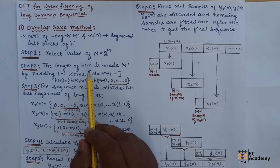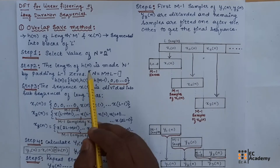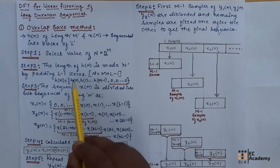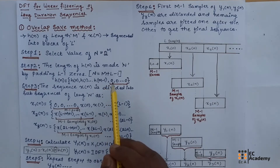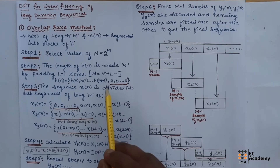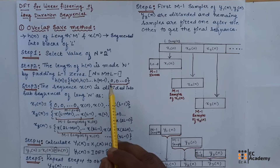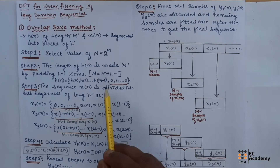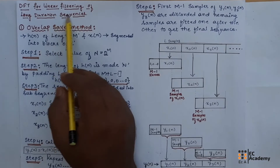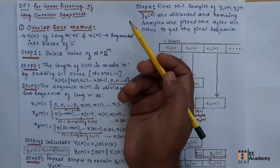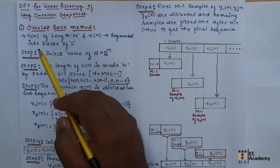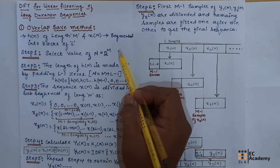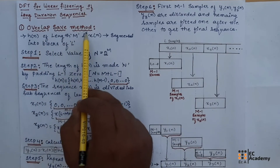The long duration sequence is segmented into short duration blocks, which are known as sub-segments. Then the successive input sequence blocks are filtered one at a time using DFT. The corresponding output blocks are fitted together to generate a combined output sequence. To perform linear filtering of long duration sequence, there are two methods: the first method is overlap-save method and the second method is overlap-add method. In this lecture, we will understand the overlap-save method.